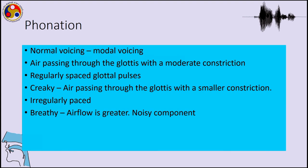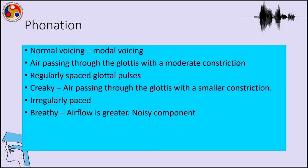When we talk about phonation, we have normal voicing which is called modal voicing, in which air passes through the glottis with some moderate constriction, vocal chord vibration, and regularly spaced normal vibration with glottal pulses. Unlike that, we can have creaky and breathy — also called murmur — where the breathy sound involves air passing through the glottis with a smaller constriction and irregularly paced glottal pulses. In breathy sounds air flow is greater and there is a noisier component.